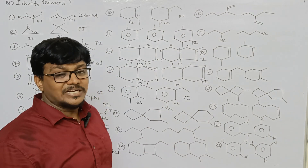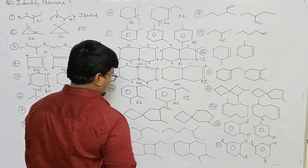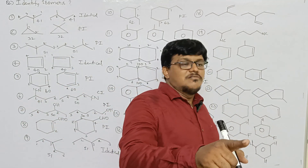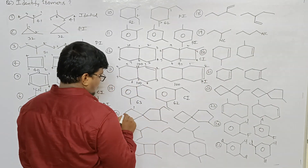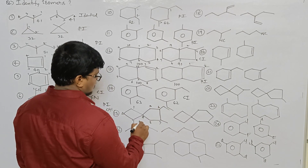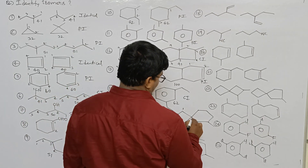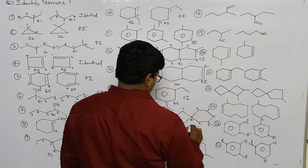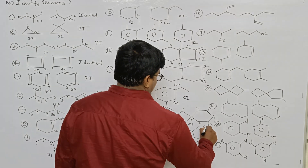Main chain is same but side chain variation takes place — that is the reason. Main chain variation versus side chain variation. The count is 1 2 3 4 5 6 7 8 — isomeric number 82. Other structure: 1 2 3 4 5 6 7 8 9 — isomeric number 91. So 82 and 91 — both are chain isomers.